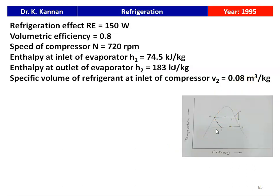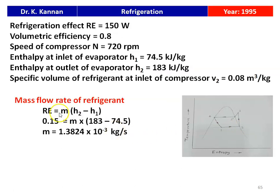This is the temperature-entropy diagram for the given refrigeration cycle, where point 1 is the evaporator inlet and point 2 is the evaporator outlet or compressor inlet. Mass flow rate from refrigeration effect: RE = m × (H2 − H1), so 0.15 kW = m × (183 − 74.5), giving mass flow rate m = 1.3824 × 10⁻³ kg/s.